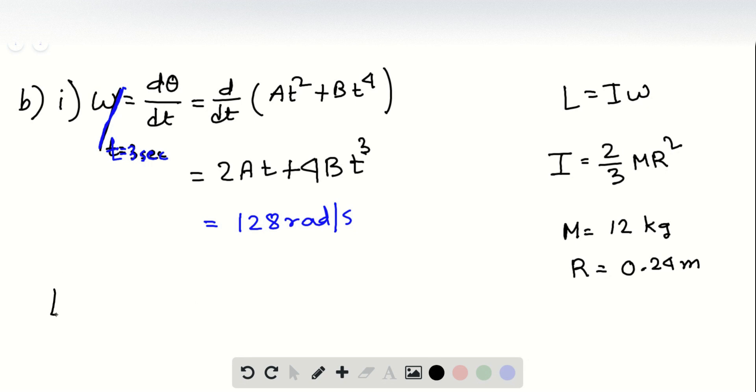So L will be I times omega again, where if we calculate this we'll see that this is going to be 59 kg meters squared per second.